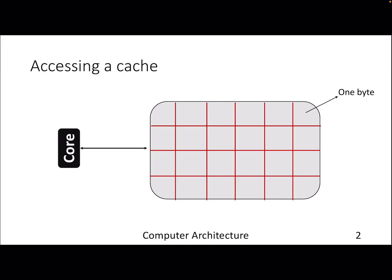At a high level, we can assume that cache is a collection of bytes — a 2D structure of rows and columns where each intersection is one byte. The processor sends a 32-bit address and demands data, and the DRAM responds with the data for that given 32-bit address.